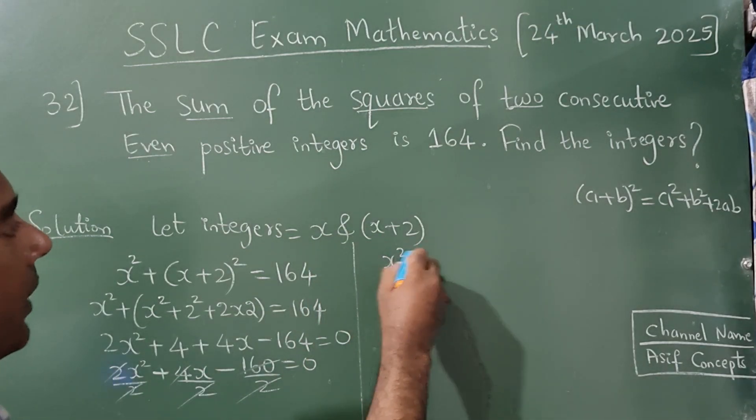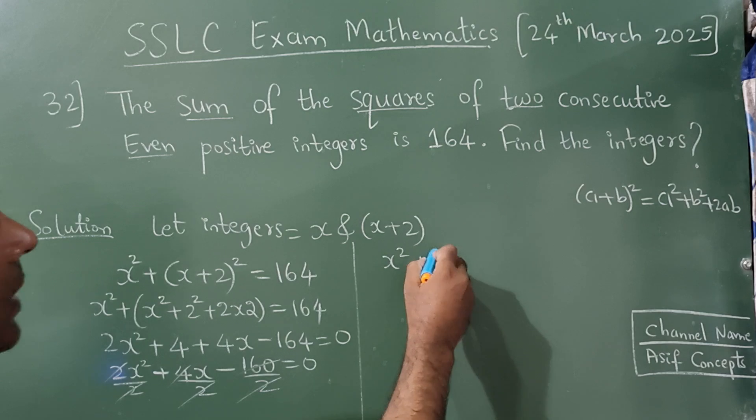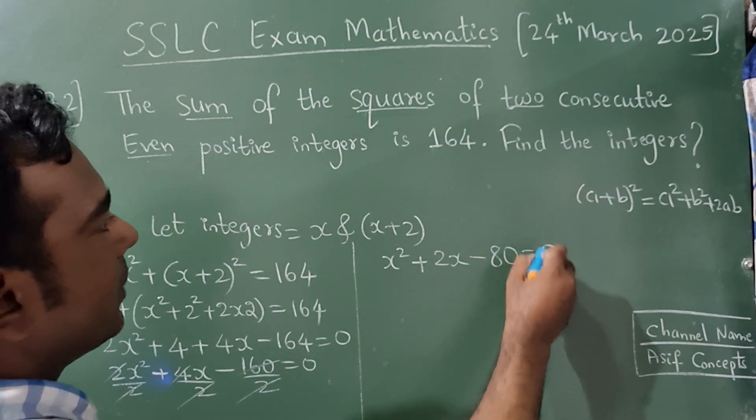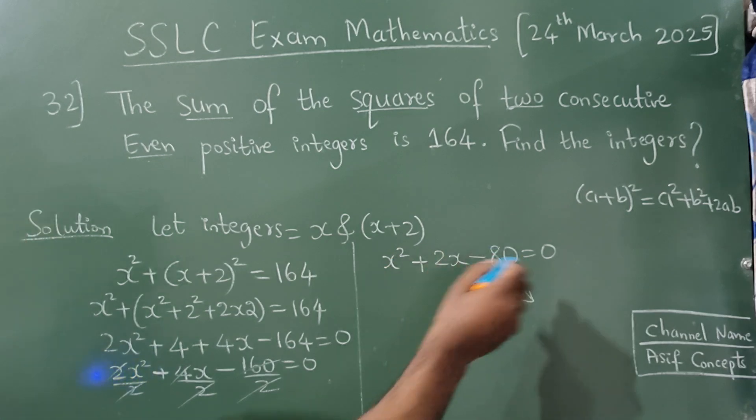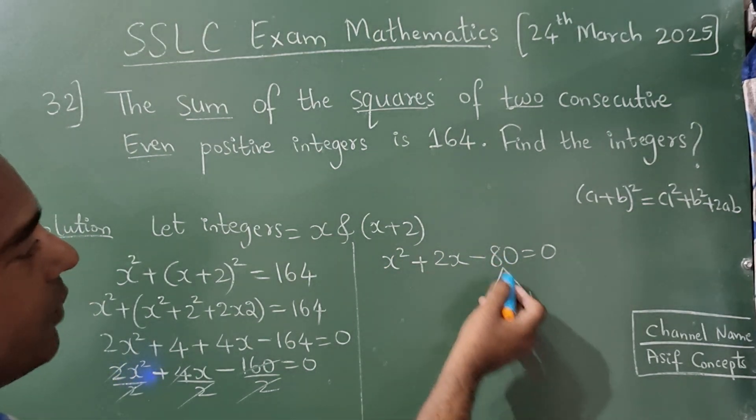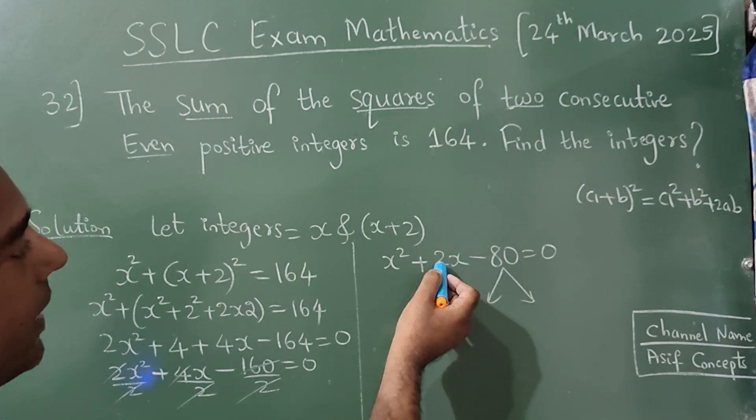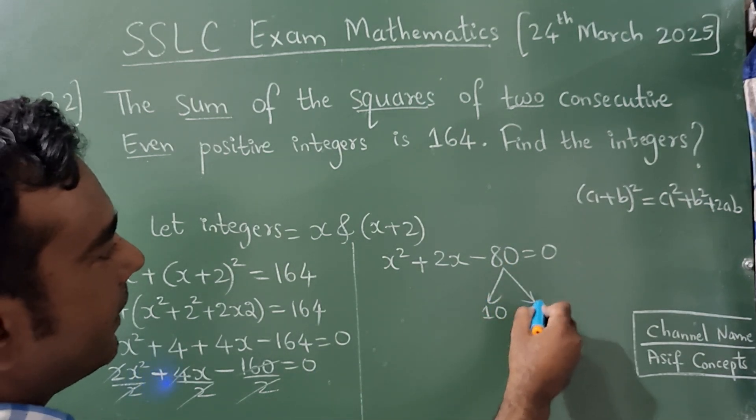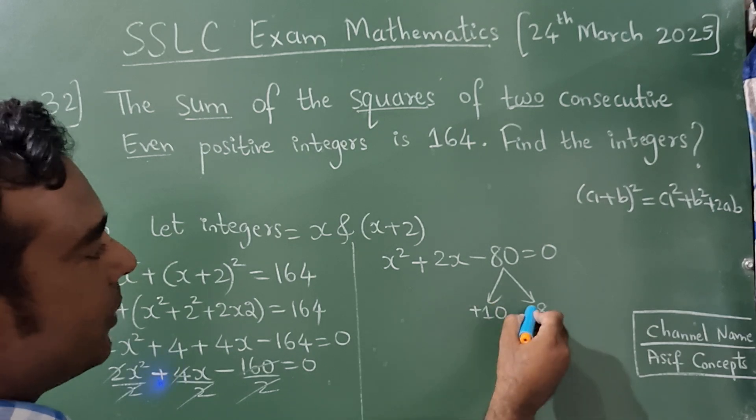Now this is of the form quadratic equation. Now tell me, if you get two numbers, if you multiply you must get minus 80, if you add you must get plus 2. So the two numbers are 10 and 8.